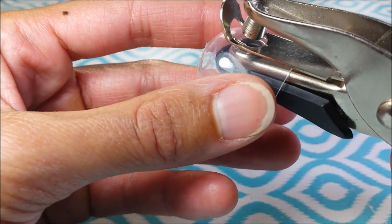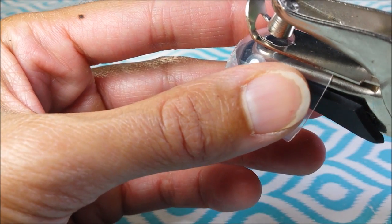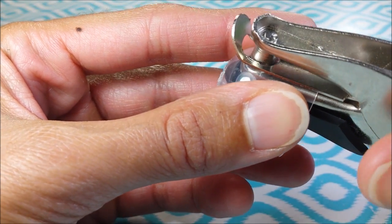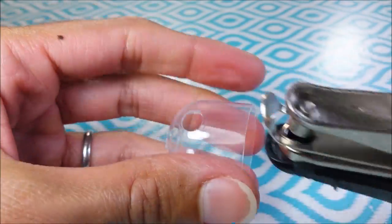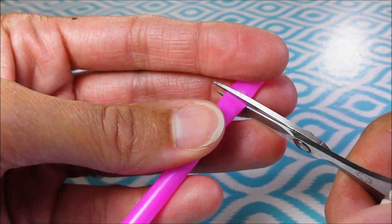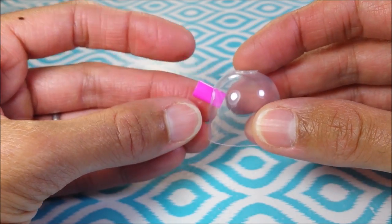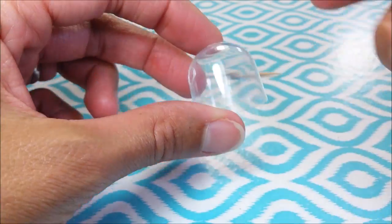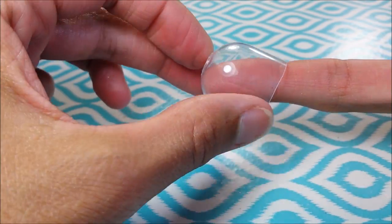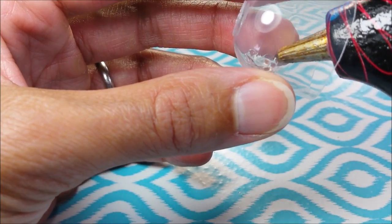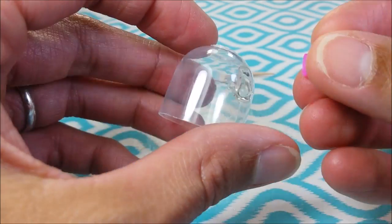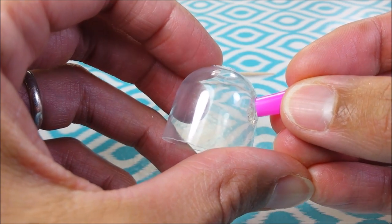And then I punch a hole about two-thirds of the way up. Then I cut off a section of a straw to fit inside my kettle. Here I have a toothpick ready and I'm squirting glue here on the inside.